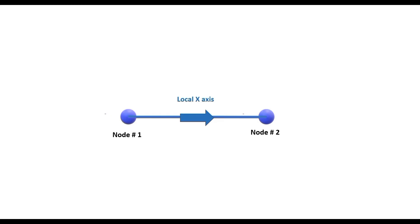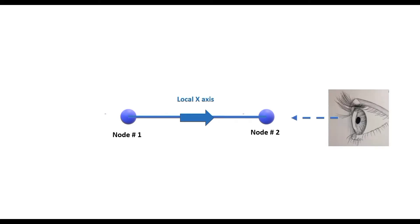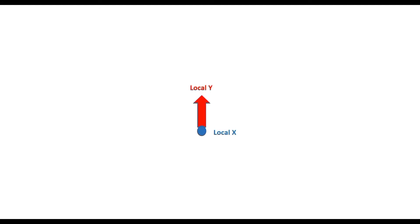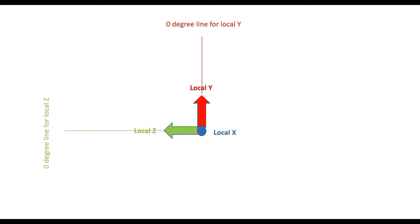Imagine you are looking at the local x-axis from its positive direction. You will not be able to see the local x-axis as it would be coming out of the page towards you. So you will be able to see the local y and the local z-axis. The local y is aligned along the vertical direction and the local z along the horizontal direction — these are called the zero-degree lines for local y and local z respectively.